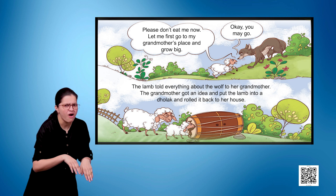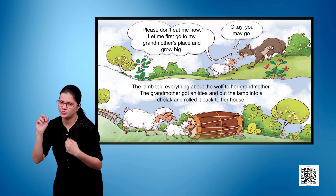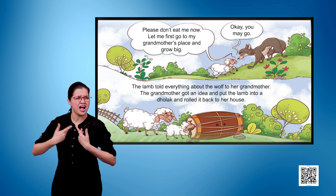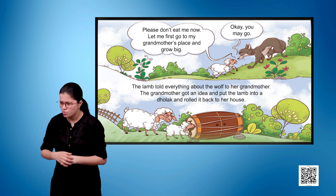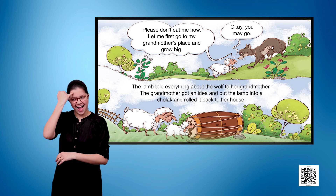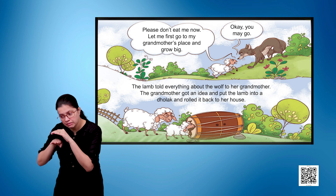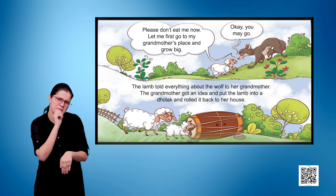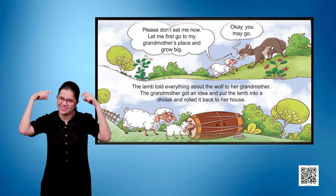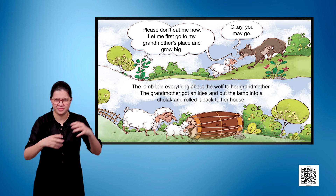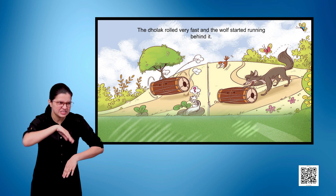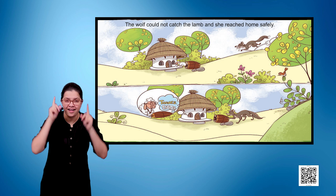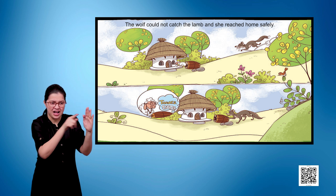The wolf says, 'Okay, you may go.' The lamb told everything about the wolf to her grandmother. The grandmother got an idea and put the lamb into a dholak and rolled it back to her house. The dholak rolled very fast and the wolf started running behind it, but could not catch the lamb, and it reached home safely.